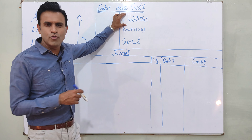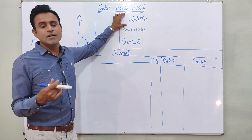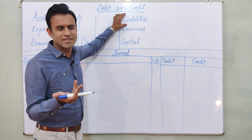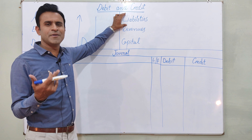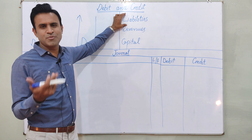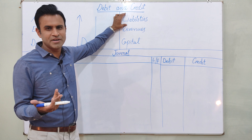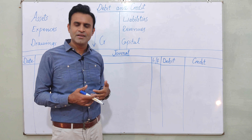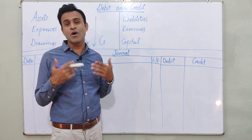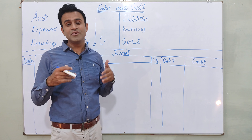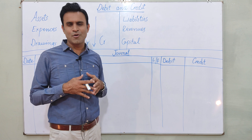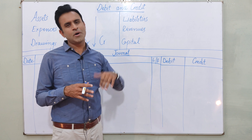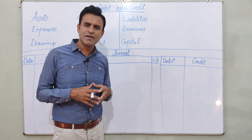Liabilities are the responsibilities of the business — money we owe to people. These are your responsibilities. You have to pay creditors. You can have accounts payable, money which we have to give back, or loans to repay. These are things you will give back. So that is what a liability is.